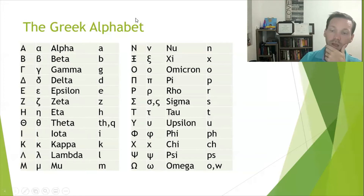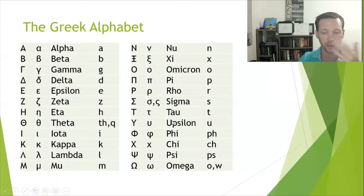Continuing over: nu, xi, omicron — take those three together. Pi, rho, sigma — take those three together. Tau, upsilon — take those. And then phi, chi, psi, omega. There's a little song that has a beat to it. Just watch that part of the video until you get it down pat.